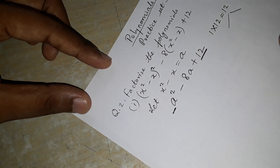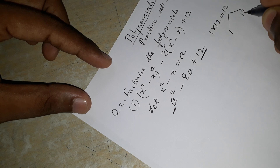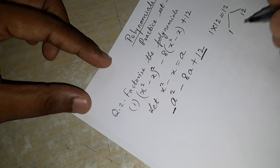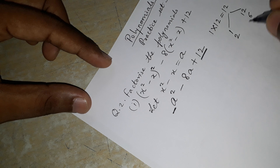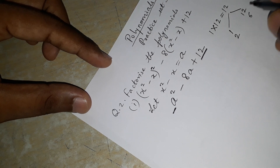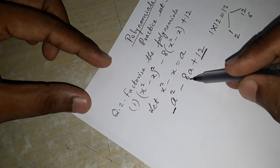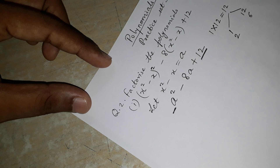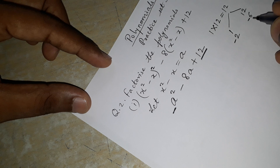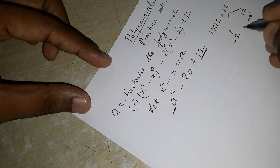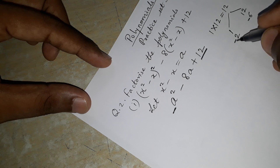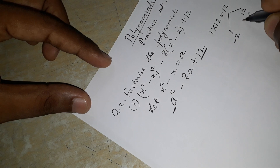We need to split 12 such that when we multiply we get positive 12, and when we add we get minus 8. Checking combinations: 1 and 12 give 13 when added; 2 and 6 give 8 when added. We need minus 8, so we give negative to both: minus 2 and minus 6. Their product is positive 12 and their sum is minus 8. So minus 2 and minus 6 are selected.